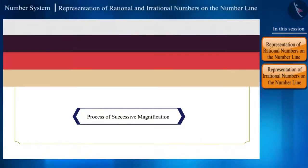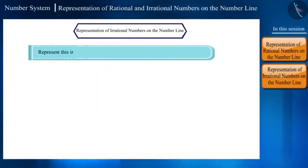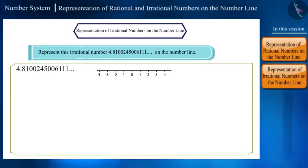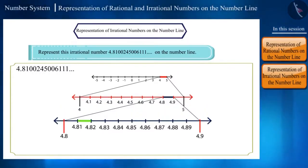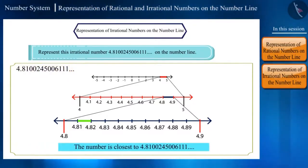Let's take an example. Represent this irrational number 4.8100245006111... on the number line. This number will lie on the number line somewhere between 4.81 and 4.82. Friends, here the numbers are non-terminating and non-repeating after the decimal. Hence, even here we will not be able to precisely spot the number but we can still come to its closest point.